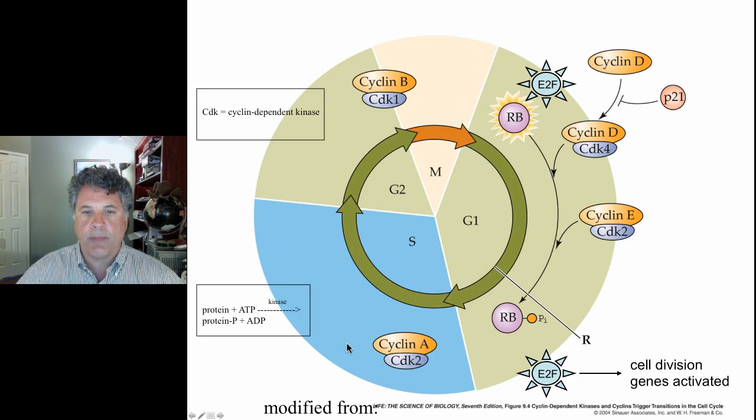This is where we're going to pick up in the next part of this lecture, but keep the key players in mind here: Cyclin-dependent kinases, cyclins, retinoblastoma, and E2F. We'll get into P21 a little bit in the next section as well.